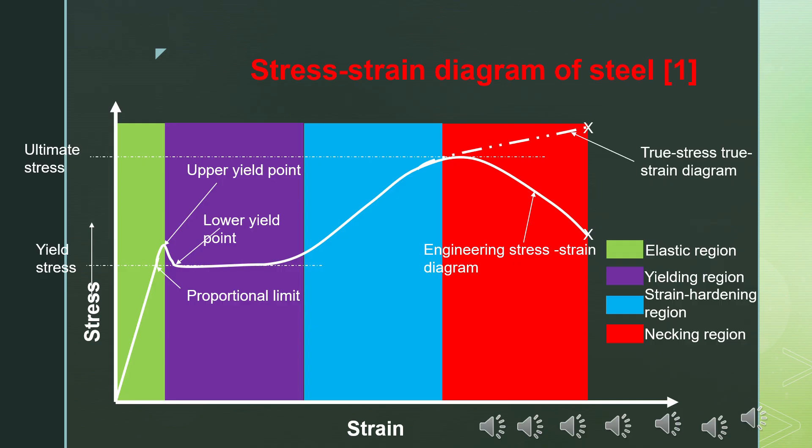What you can see on the screen in the solid white lines is the stress-strain diagram of steel. It is applicable to any type of steel — high strength steel, mild steel, etc. We have four regions: the elastic region, the yield region, the strain hardening region, and the necking region.